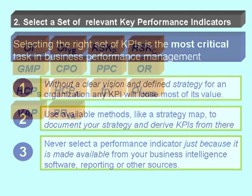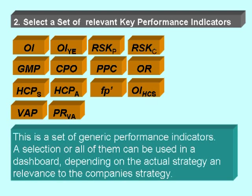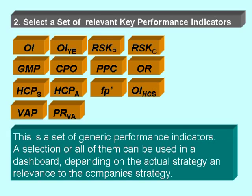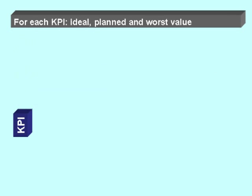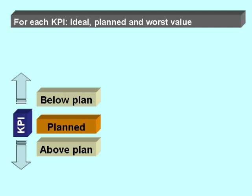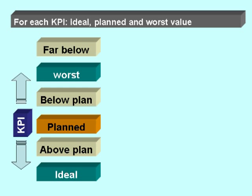Never select a performance indicator just because it is made available from your business intelligence software, reporting, or other sources. In the previous presentations we have already developed a set of quite generic performance indicators. We can use a selection or all of them in a dashboard depending on the actual strategy and relevance. Once we have selected the KPIs, we need to define for each KPI the ideal, planned, and worst value.